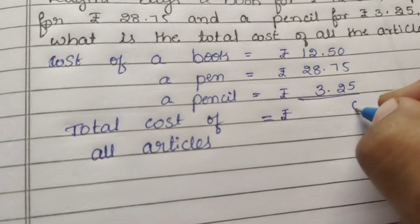Let's add them. 0 plus 5 is 5, 5 plus 5 is 10. So 0, carry 1. 1 plus 5 is 6, 6 plus 7 is 13, 13 plus 2 is 15. So 5, carry 1. 1 plus 2 is 3, 3 plus 8 is 11, 11 plus 3 is 14. So 4, carry 1. 1 plus 1 is 2, 2 plus 2 is 4. So the answer is 44.50.